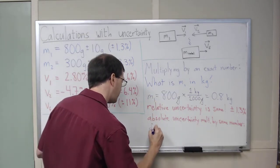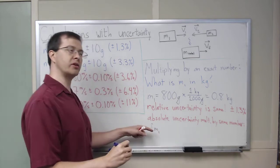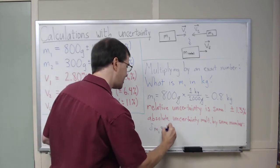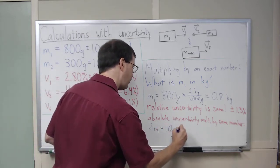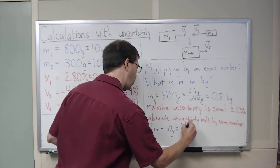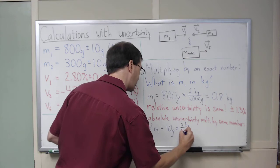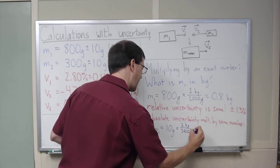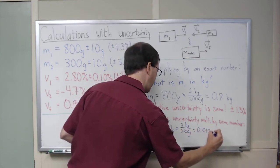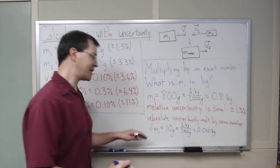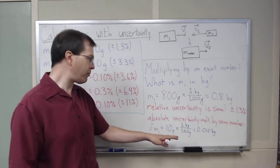my uncertainty in M1, my absolute uncertainty in M1 was 10 grams, and we multiply by that exact same 1 kilogram over 1,000 grams, and we get 0.010 kilograms. That's the uncertainty in M1 that I come up with,